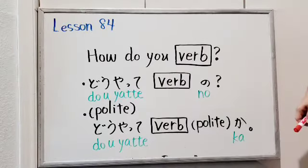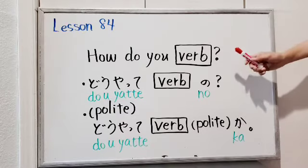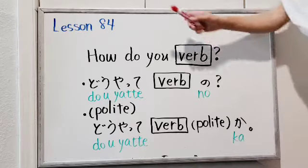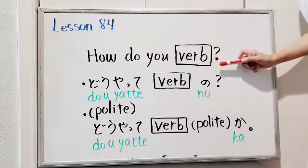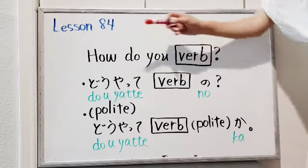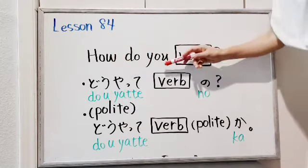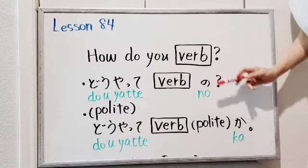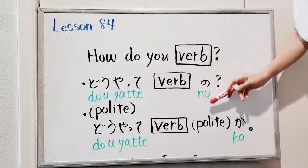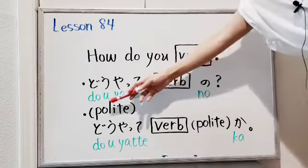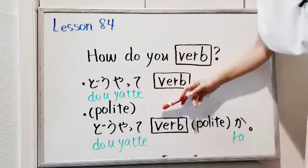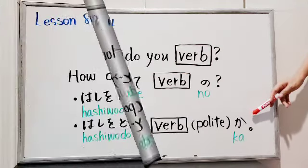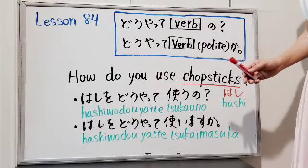If you want to say 'how do you verb' in Japanese, you can use this structure: どうやって verb の? Or for the polite form: どうやって verb polite か? Let's take a look at some examples.